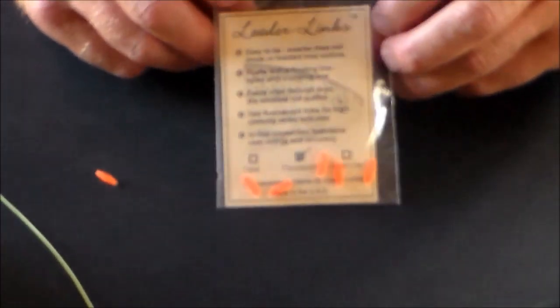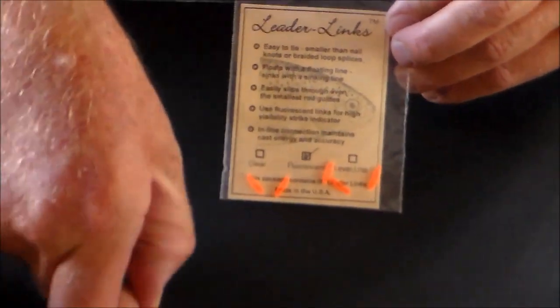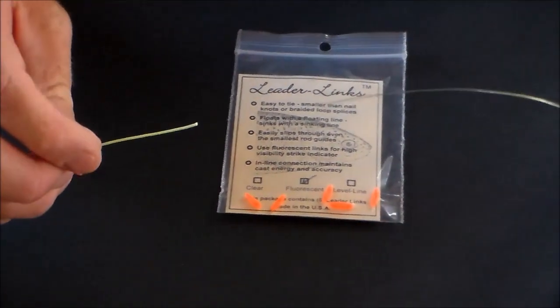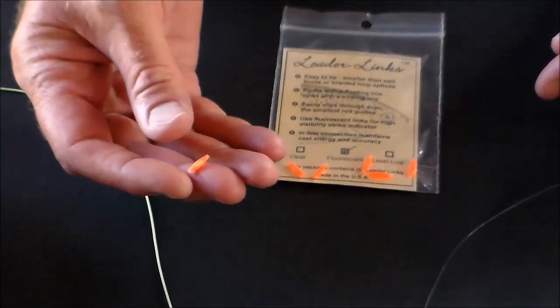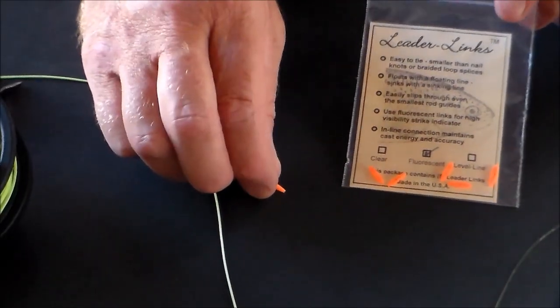This is a demonstration video to show you how to attach fly line to leader using leader link. It's about the size of a grain of rice, very light, very strong.